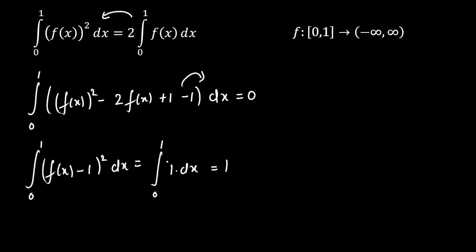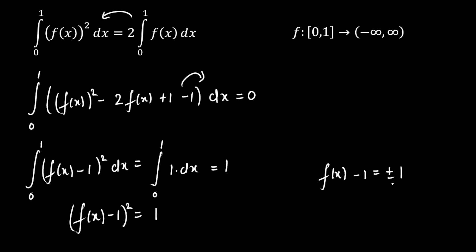Now I am going to compare the functions. Here we get (f(x) minus 1) whole square equal to 1. So I can directly compare and write this as f(x) minus 1 equals plus or minus 1. Now f(x) will be equal to either 0, when taking minus 1, or equal to 2, when taking plus 1.